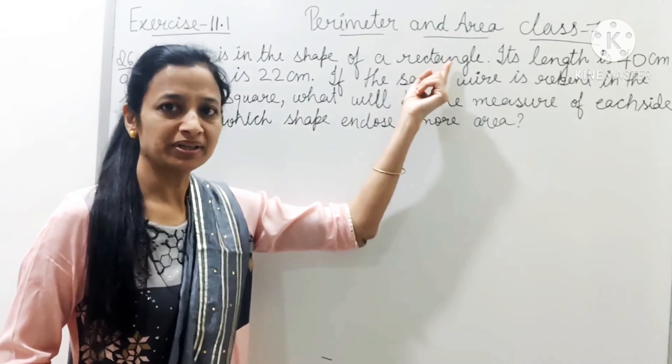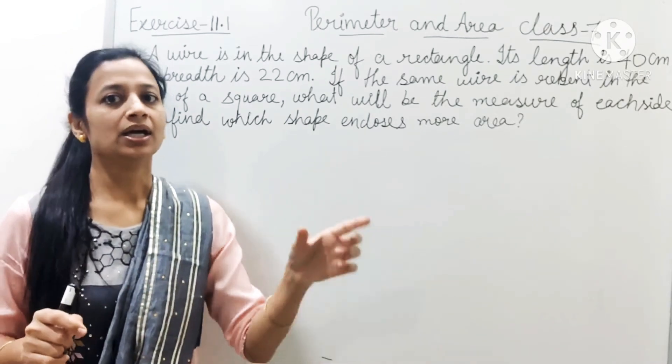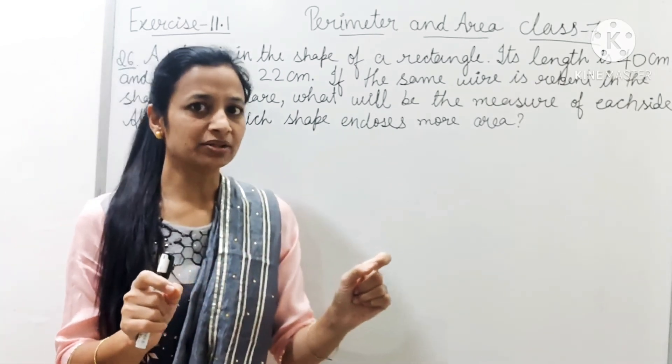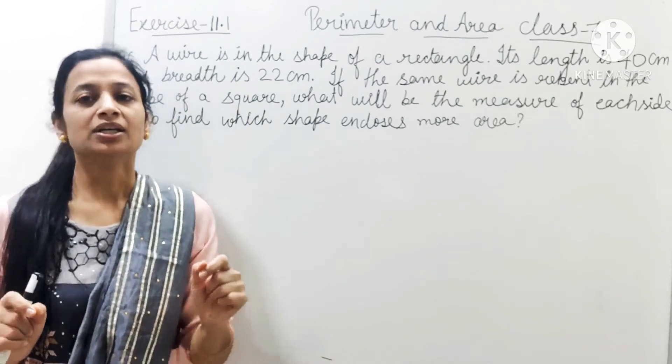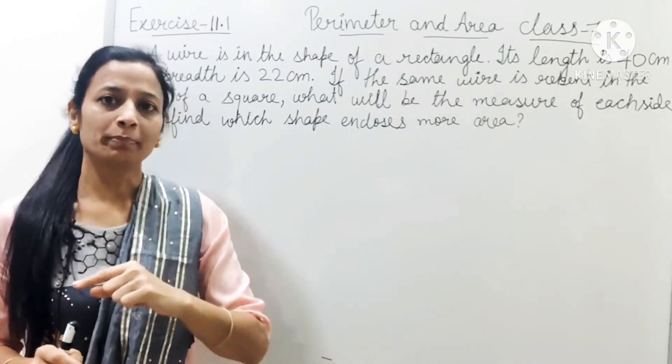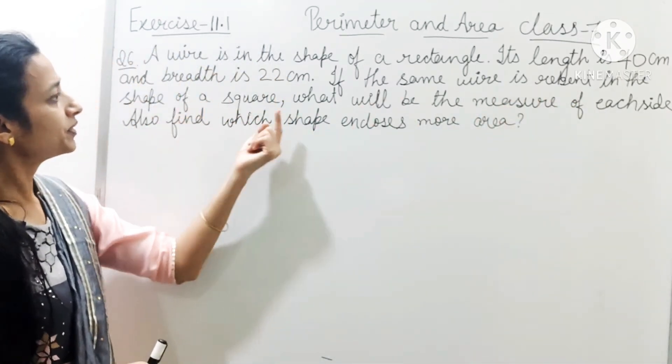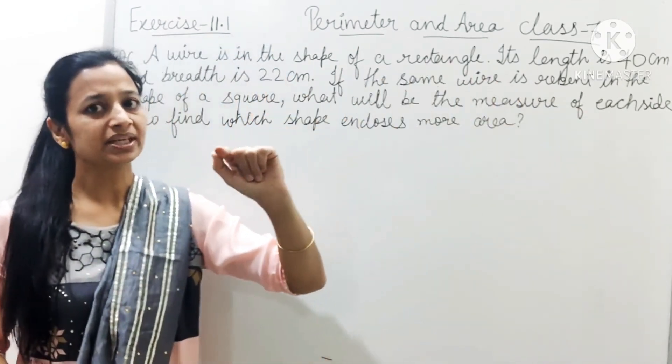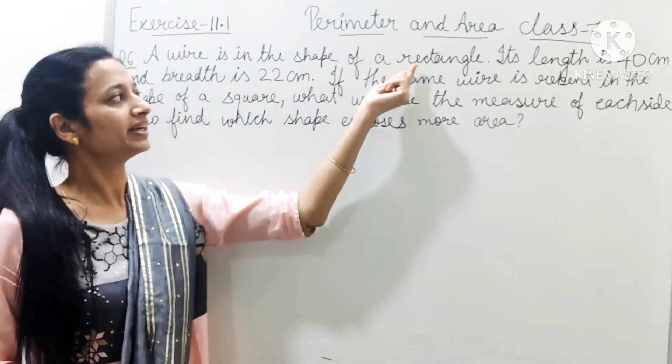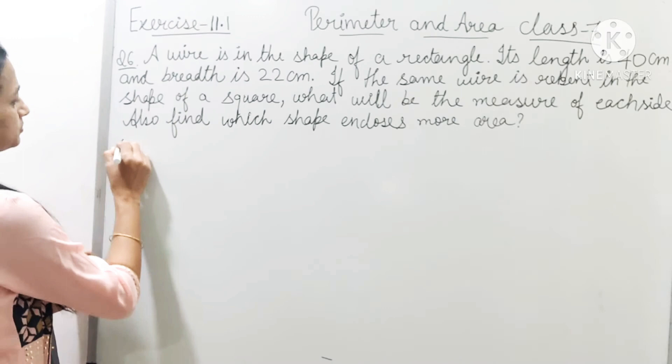So what do we do? Rectangle perimeter or square perimeter. If we find the perimeter, we can find the side.